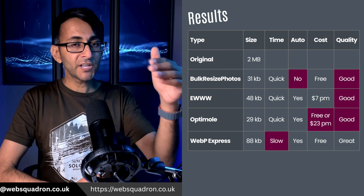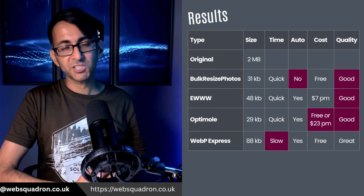Optimal is actually the smallest file size. But there was a little bit of noise — the same level of noise with EWWW and Optimal. WebP Express was the sharpest but at 88 kilobytes. If you've got 10 of these images, the originals would have been 20 megabytes, Bulk Resize would be 310 kilobytes, and WebP Express would be 880 kilobytes. That might mean nothing to a lot of people, but if you have a gallery of 30 images, even with lazy loading, that could be make or break. In terms of processing time, the first three were quick and WebP Express was slow.